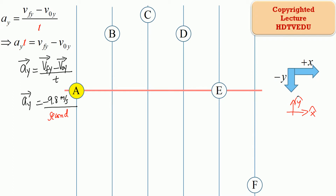So if we have a starting velocity that is pointing up, whatever that number is, add negative 9.8 to it and we get the velocity after one second. Our initial vertical velocity component is positive 19.6, so positive 19.6 plus negative 9.8 — what is that equal to?